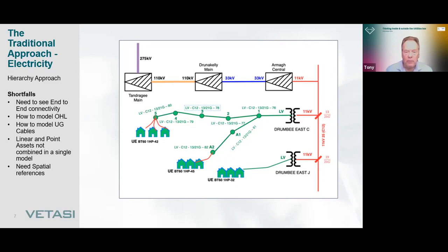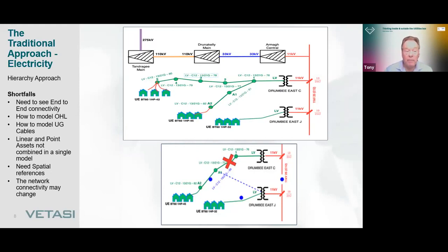Like water, electricity network assets are spread around the whole country over a large geographical area, and that needs to be taken into account when scheduling work. The shortfalls are: no end-to-end connectivity, no way to model overhead lines or underground cables, no single asset model. And what happens when the network changes? Sometimes a new circuit changes the routing, or someone operates a switch in the control center and the whole network connectivity model can change. We need something which can adapt rapidly to that scenario.